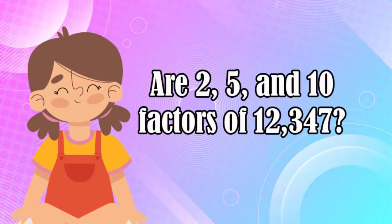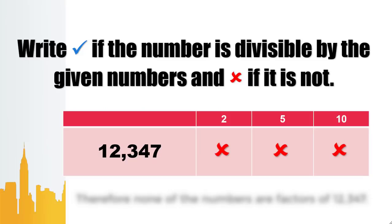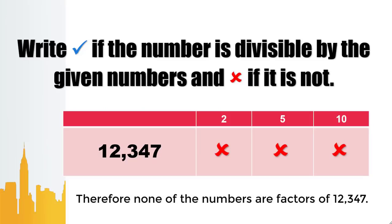Problem 3: Are 2, 5, and 10 factors of 12,347? Going to the divisibility test. Is 12,347 divisible by 2? No, since the digit on the 1's place is not even. How about 5? No — the digit on the 1's place is neither 5 nor 0. How about 10? No — the digit on the 1's place is not 0. Therefore, none of the numbers are factors of 12,347.